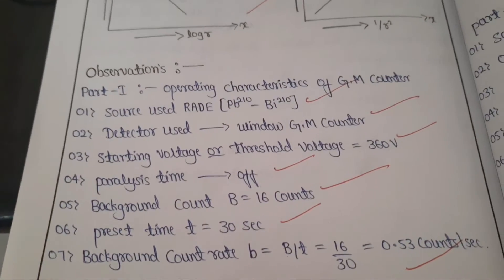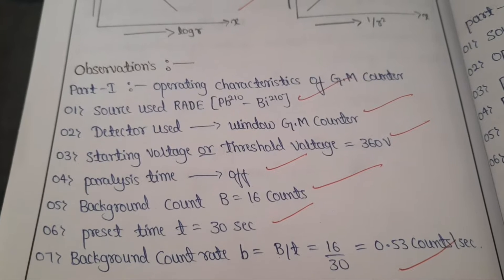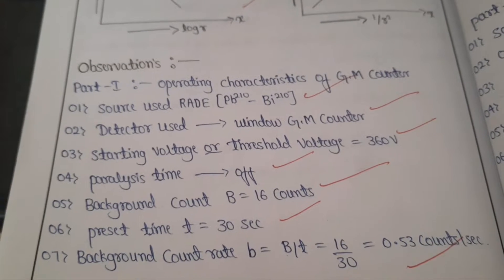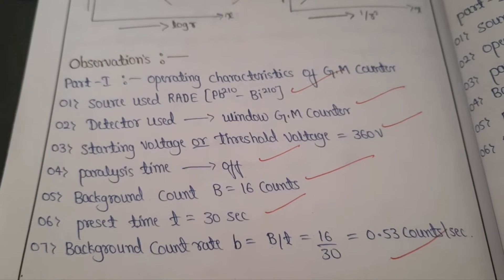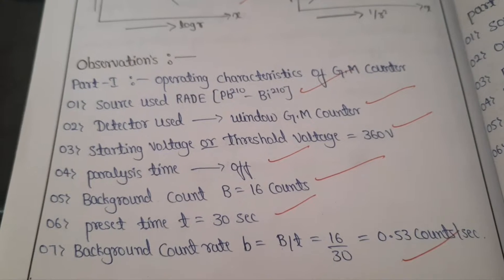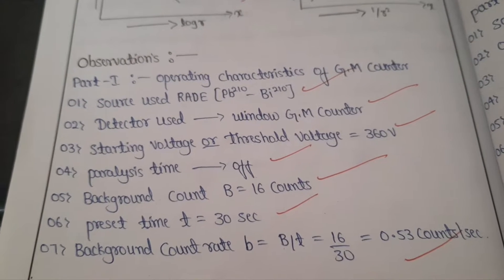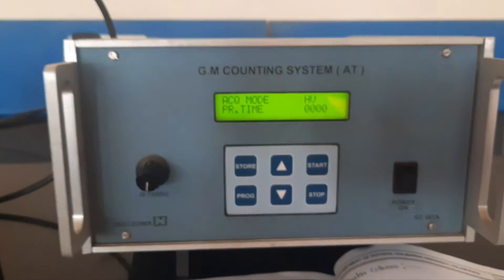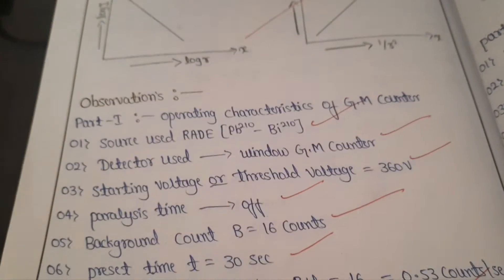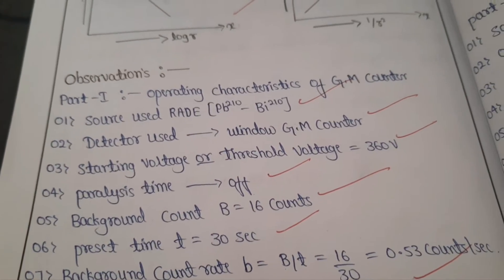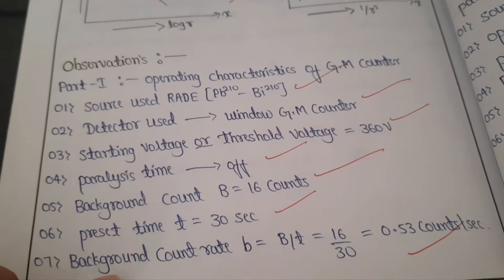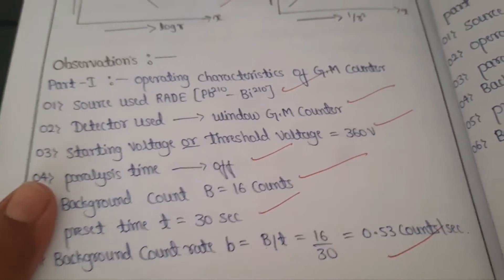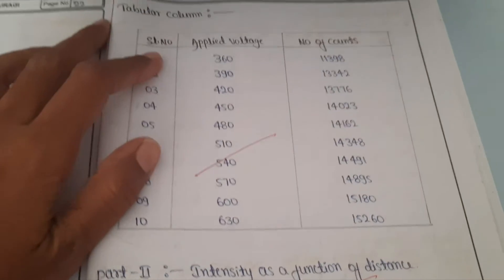First, write down the observation for operating voltage of the GM counter. As I explained in the previous video, how to determine the operating voltage of the GM counter — it is 540 volts. You can refer to the previous video. Tabular column one is for operating voltage.